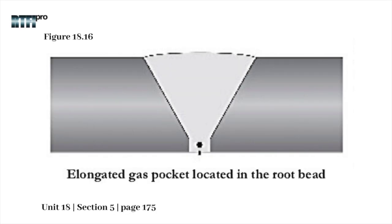Hollow bead is elongated gas trapped in the weld root area. Problems with hollow bead begin in the root pass when the primary causes are very high welding currents and fast welding speeds.